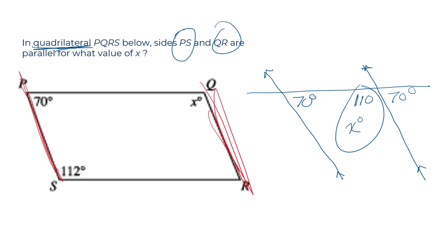They would be parallel if what? If X is equal to 110 degrees, 110 plus 70 is 180. So answer, 110.